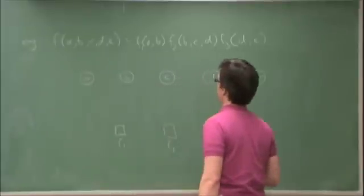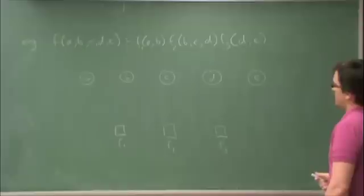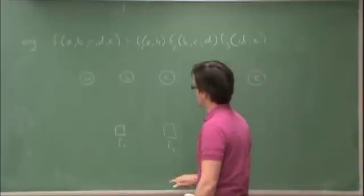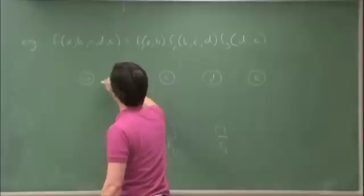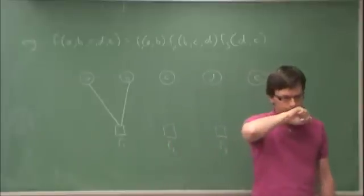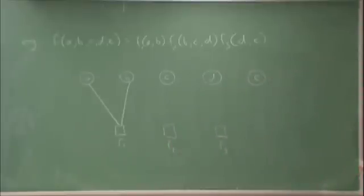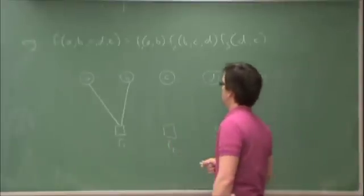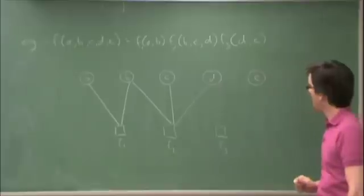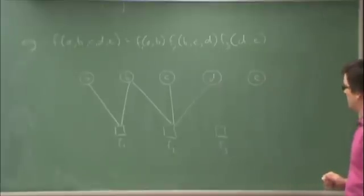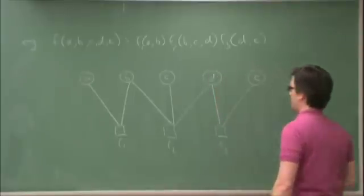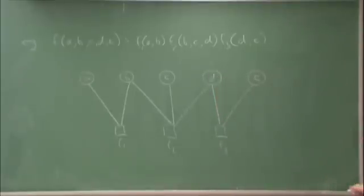And what we do is we draw an edge connecting a variable and a factor if that variable appears in that factor. So, for F1, we have A and B. For F2, we have B, C, and D. And for F3, we have D and E. So, that is a factor graph. It's a bipartite graph.